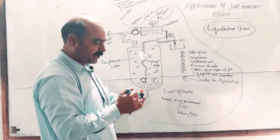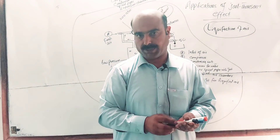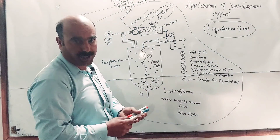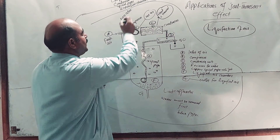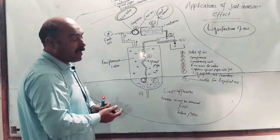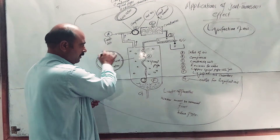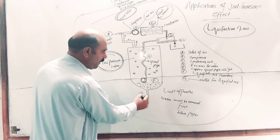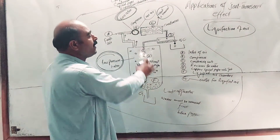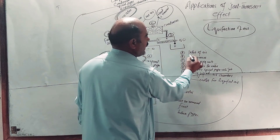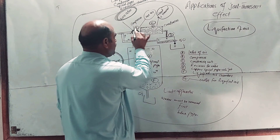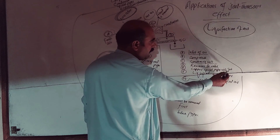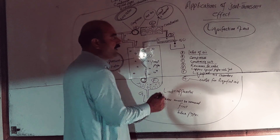The remaining gas in the expansion chamber goes back to the compressor along with fresh air, and the process repeats. With repeated compression and expansion, the temperature keeps lowering and the gas converts to liquid form. Except for hydrogen and helium — which have very low critical temperatures — all gases liquefy. The compressor compresses the air to about 200 atmospheric pressure; after expansion it drops to about 180 atm. The labeled parts are: (A) inlet of air, (B) compressor, (C) condensing coils, (D) receiver for water, (E) copper spiral pipe with jet, (F) liquefied air chamber, (G) outlet for liquefied air.